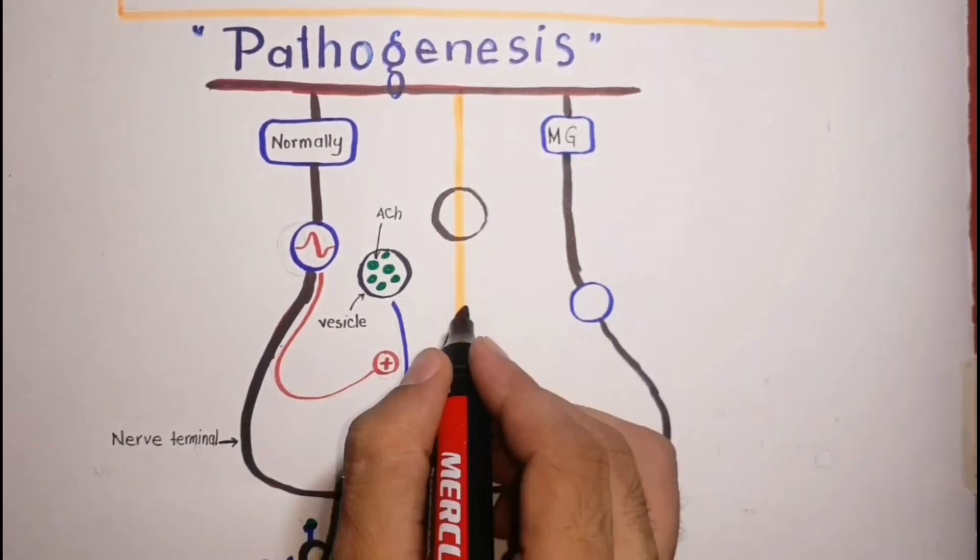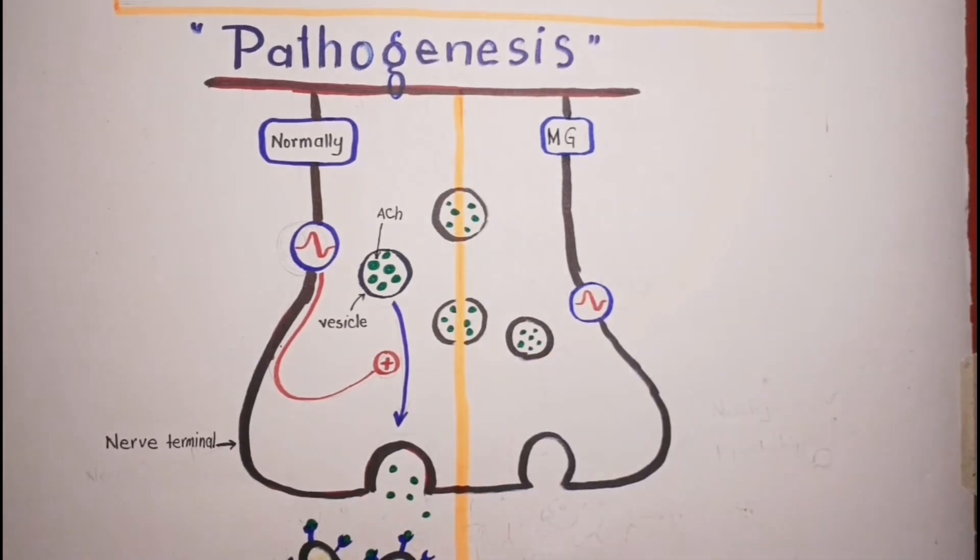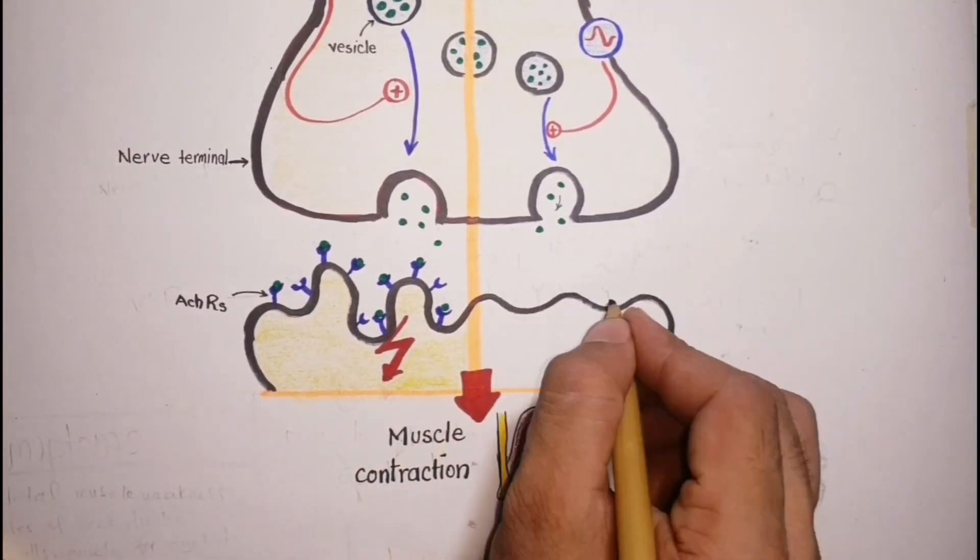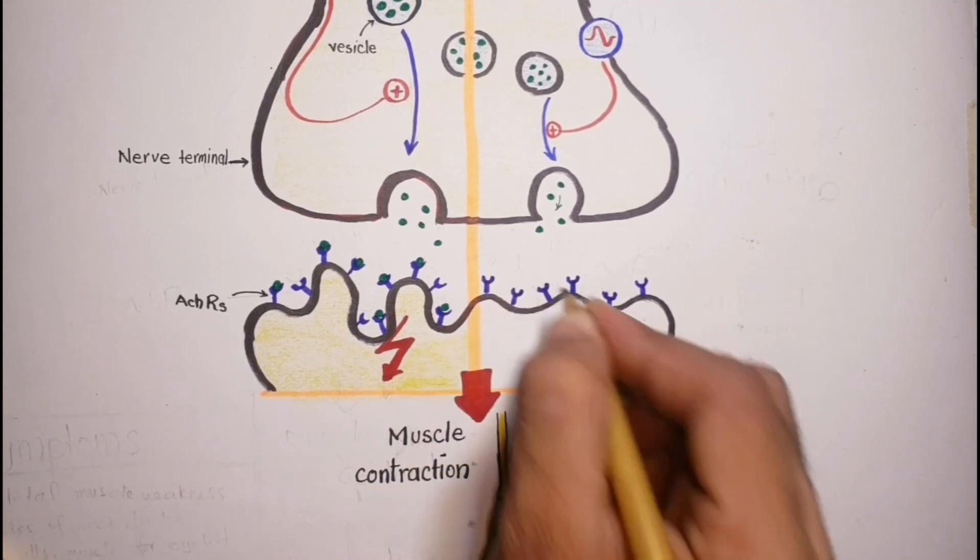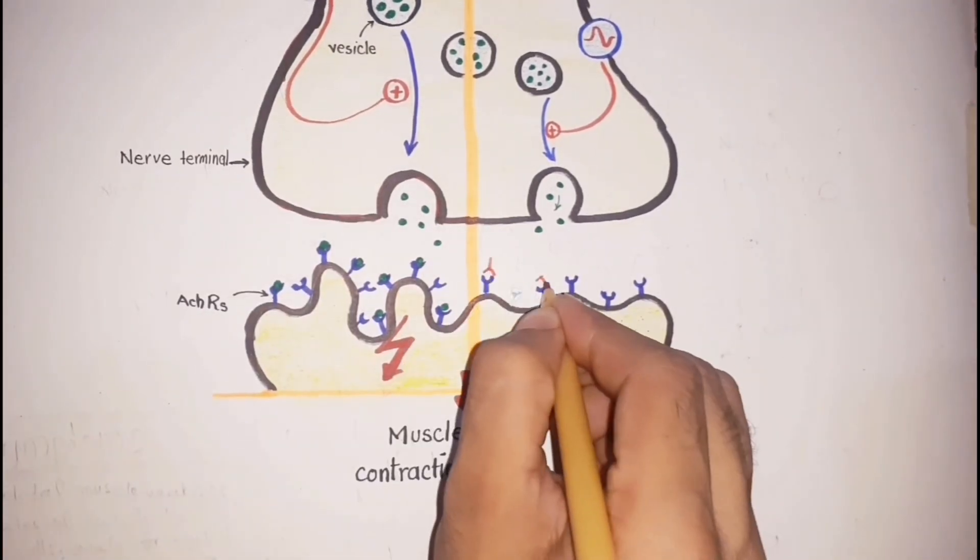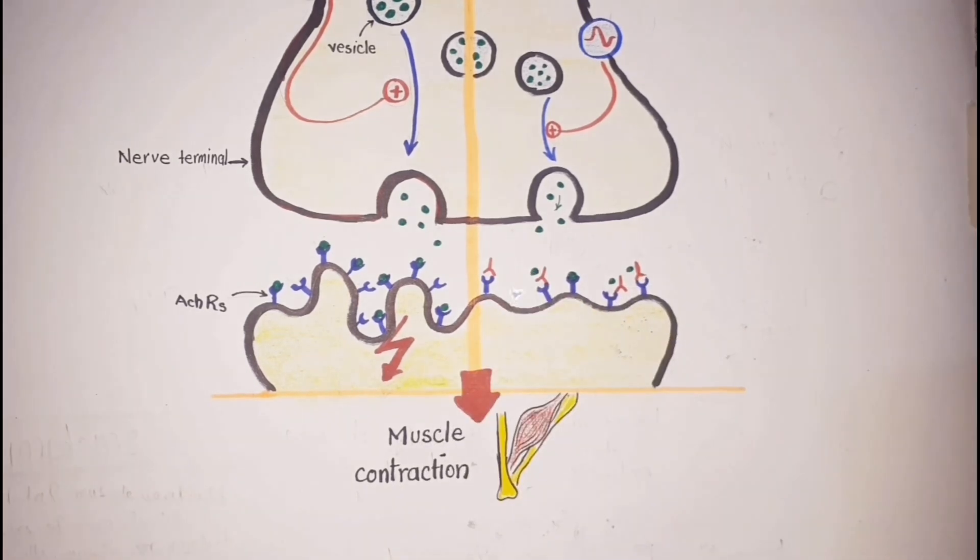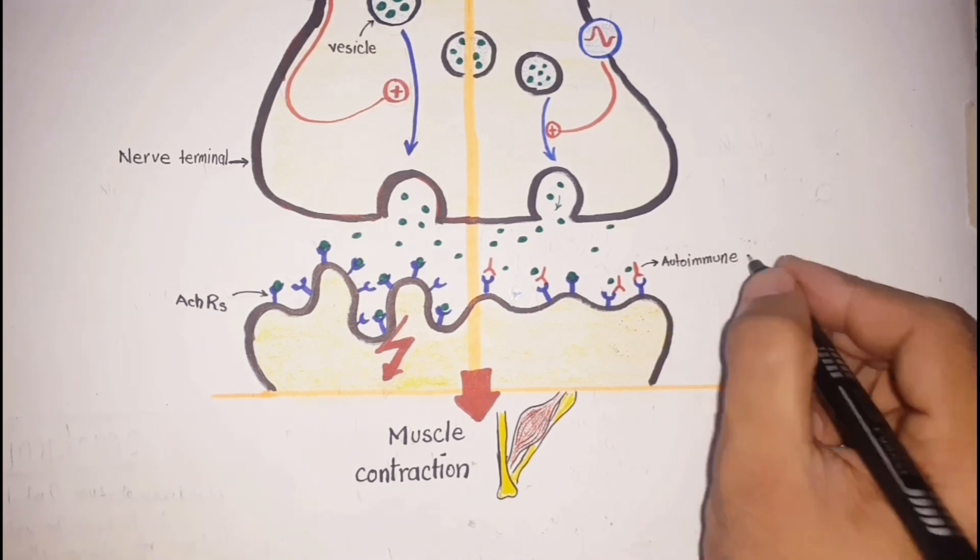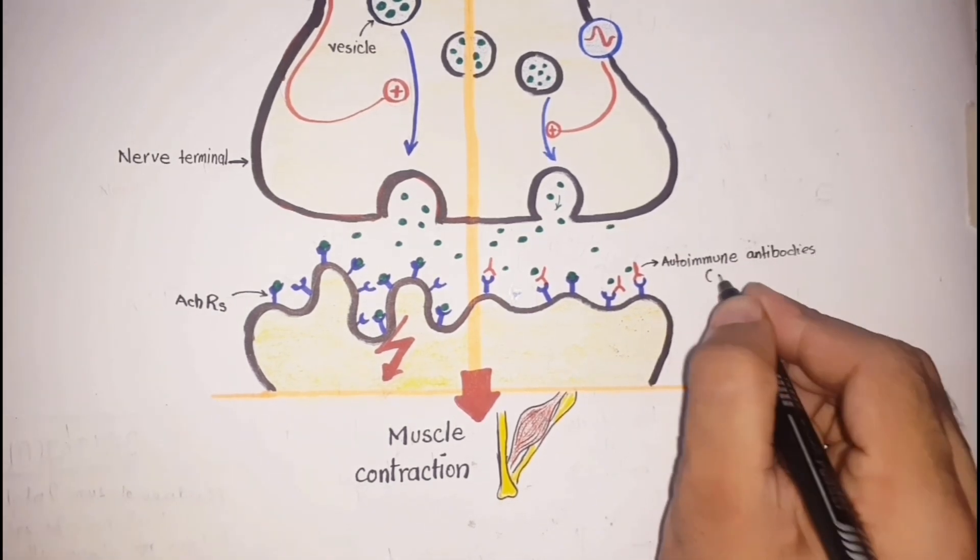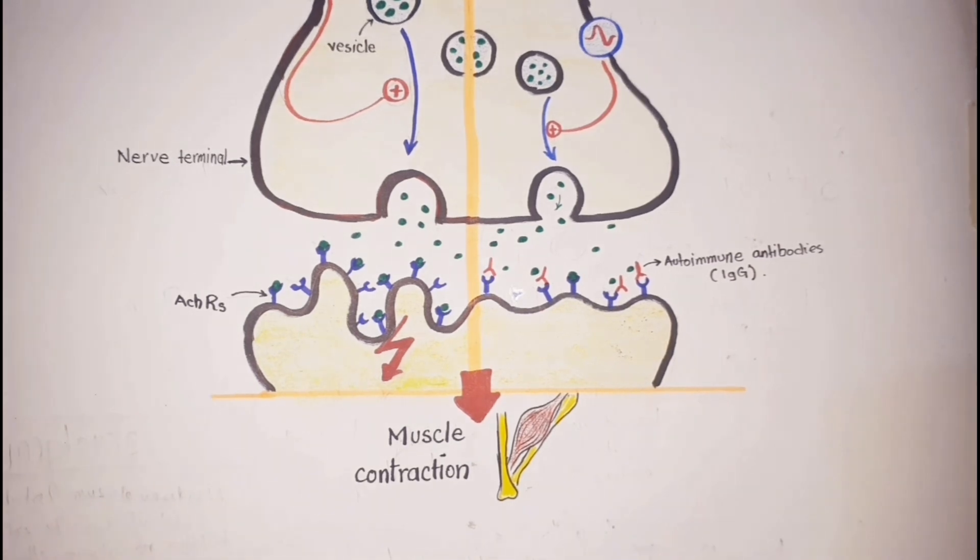In myasthenia gravis, neurotransmission pathway is unaffected and acetylcholine release occurs normally from the presynaptic nerve terminal. But the antibodies that are produced by myasthenic patients against its own body, the autoimmune antibodies specifically IgG, reduce the number of available acetylcholine receptors by blocking the active sites of these receptors. This leads to the reduction in the number of available acetylcholine receptors in the post-synaptic muscle membrane.